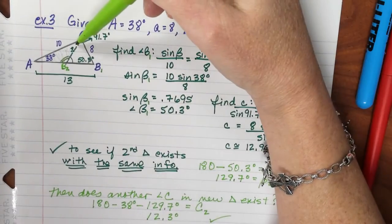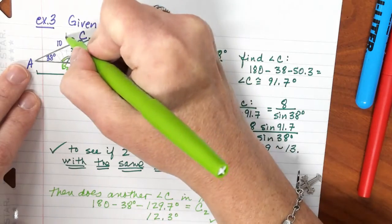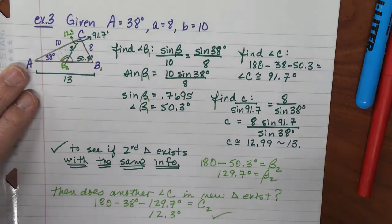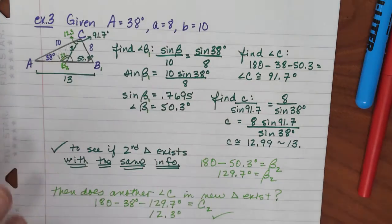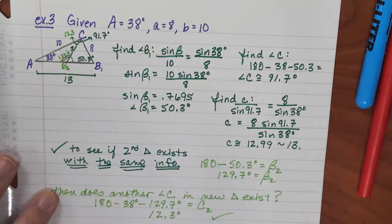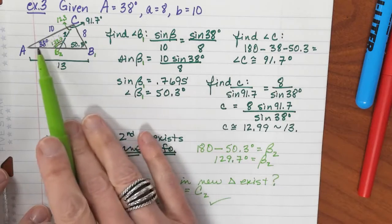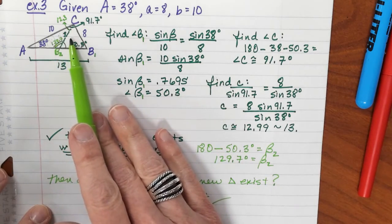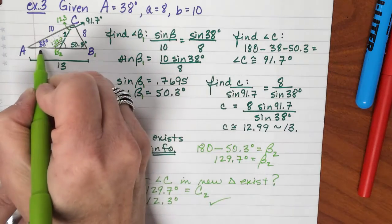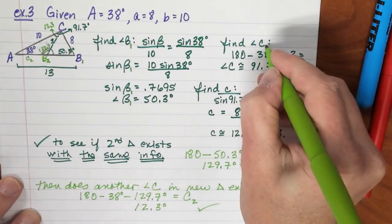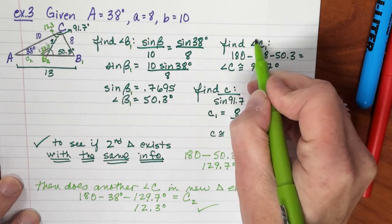This little bitty angle right here, that part of the angle is the 12.3. This part of b right here was 129.7. So, I now know I have another angle that exists and I've already determined the three angles. I already have the two sides, two out of the three sides. I just need my new C side over here. C side. So, that would be little C2. That would make this C1 and this C1. Big C, angle C.